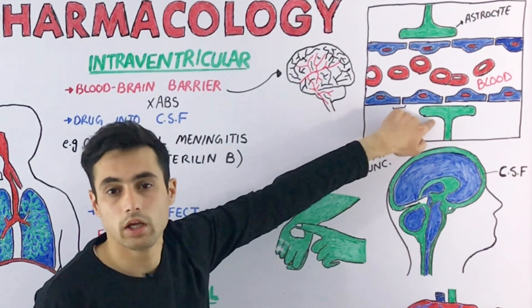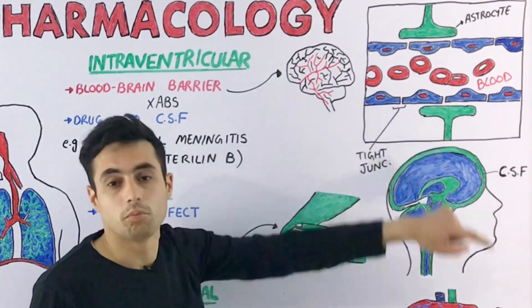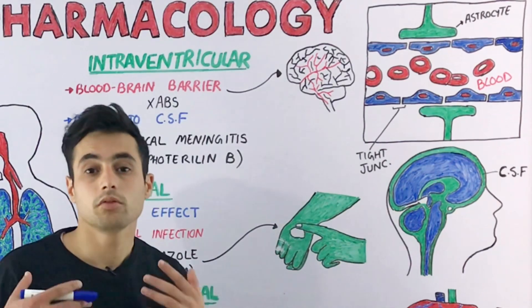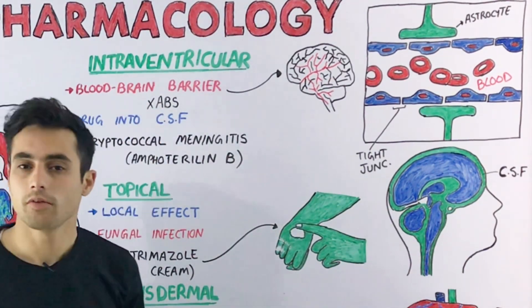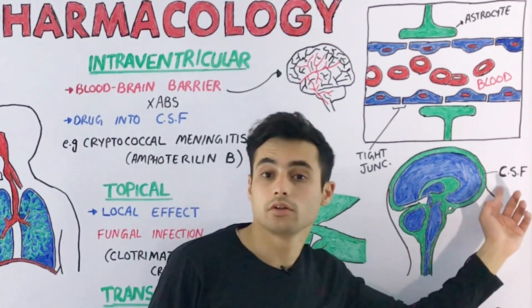So how will you deliver the drug into your central nervous system? You can do that by using the intraventricular or intrathecal route of drug administration. With the intraventricular route, you inject the drug directly into your cerebrospinal fluid.